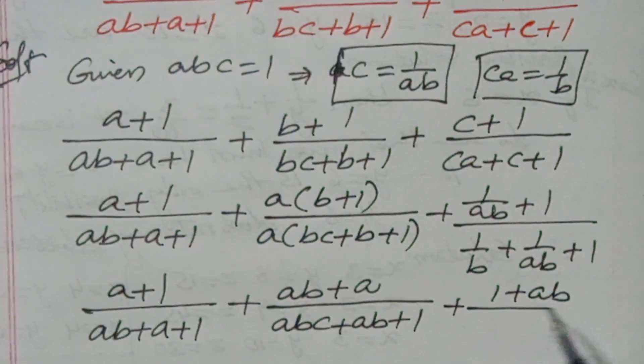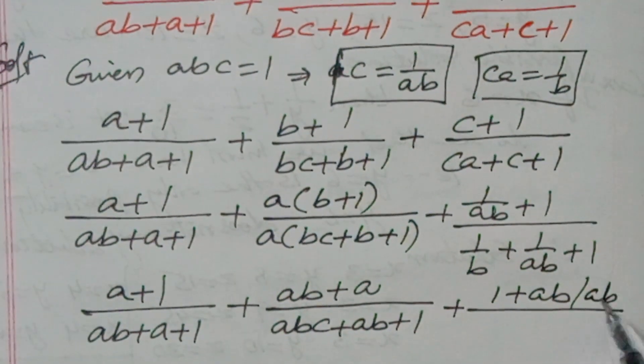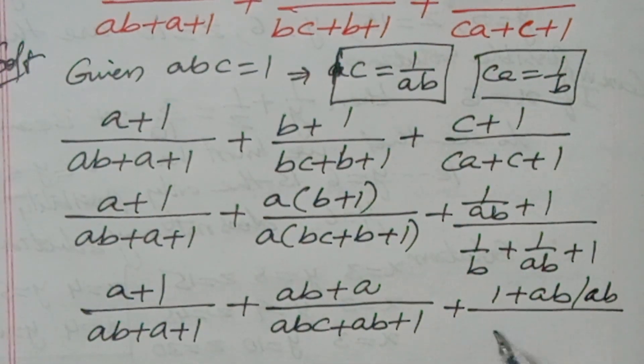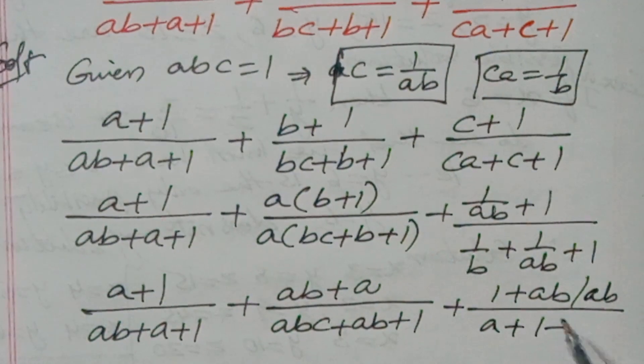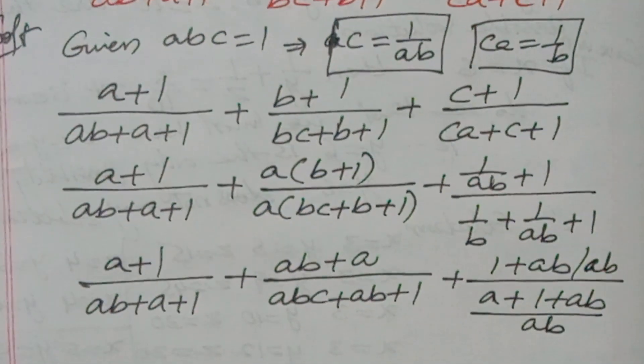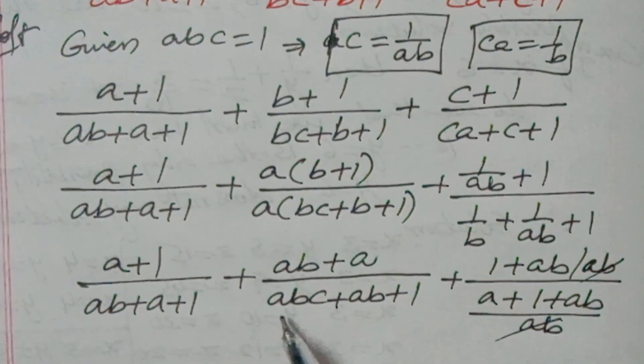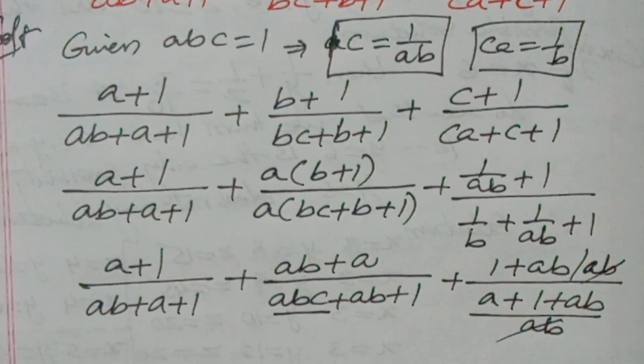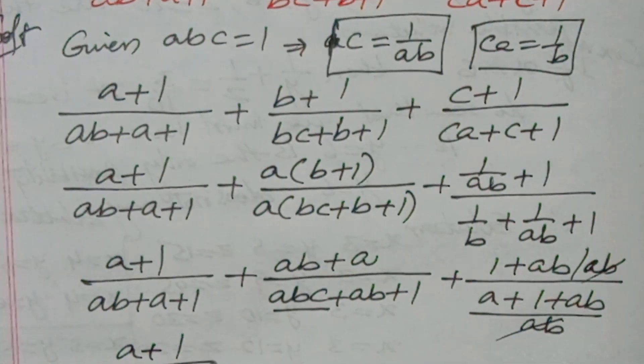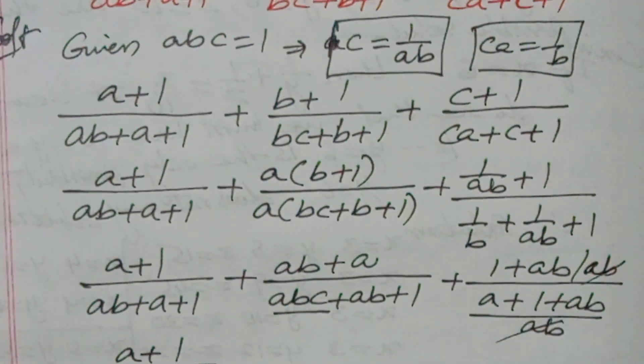The denominator will get ab. a plus 1 by ab, by ab will get, now ab get cancelled here. Now here abc value is 1. Number: a plus 1 by ab plus a plus 1.